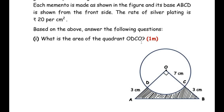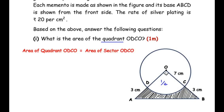The first question asks: what is the area of the quadrant ODCO? We must pay attention that this is a quadrant because the central angle at point O in the figure is given as 90 degrees, which means this is one fourth part of the entire circle. A quadrant is one fourth of the entire circle, and this quadrant ODCO is also the minor sector of this entire circle.